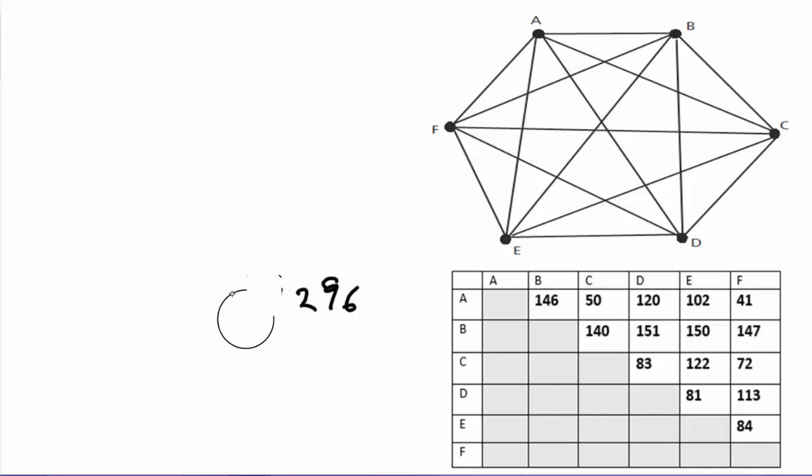Recall that the very first step involves taking all the possible weights and listing them from smallest to largest. If you look at the possible weights in our table, you should see that the smallest weight is 41. We can put a mark next to them to indicate we've used that one. After that is 50, then 72, then 81.